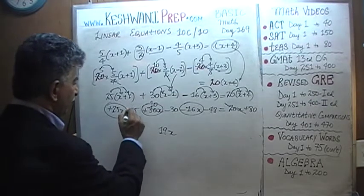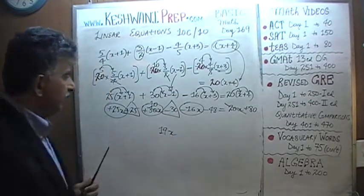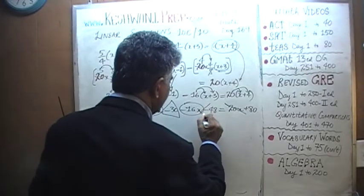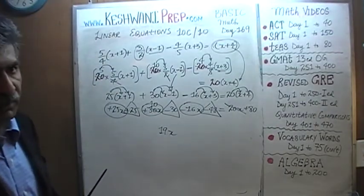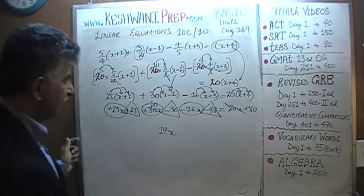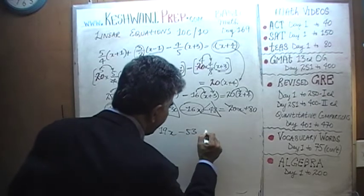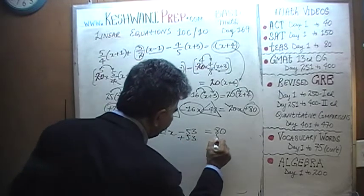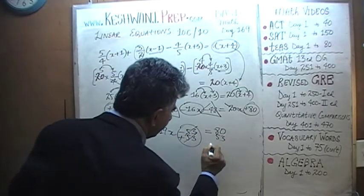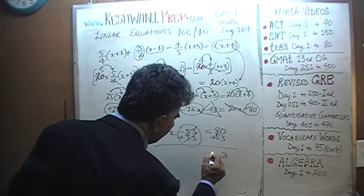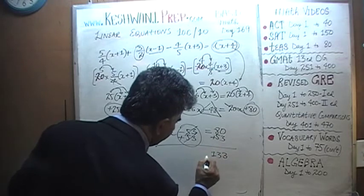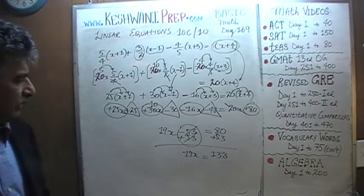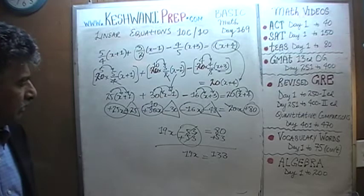Now let's combine the numerical values. So we have positive 25 and a negative 30. That's a negative 5. Positive 25 and a negative 30, that's negative 5. Negative 5 and a negative 48. Negative 5 and a negative 48. 48 plus 5 is 50 plus 3 is 53. Negative 53. And that has to equal this 80 right here. I hope you're with me. Now let's just add 53 to both sides. It goes away. Let's add 53 and we end up with 3 and 13. Voila. We end up with 19x equals 133.